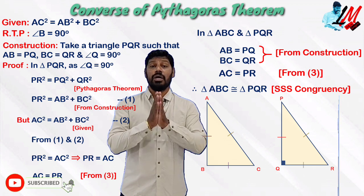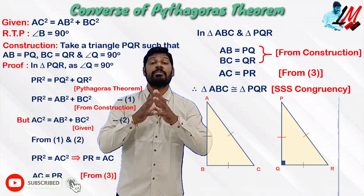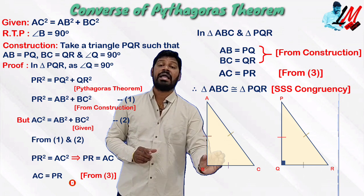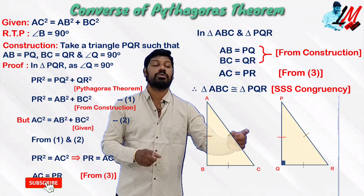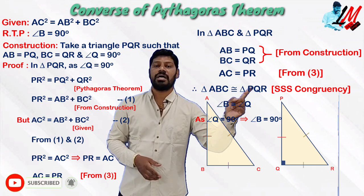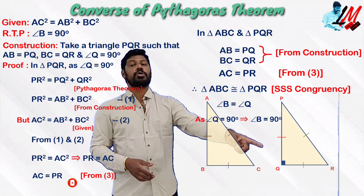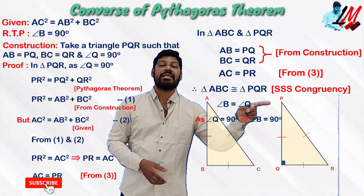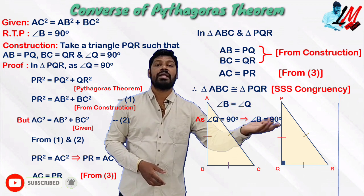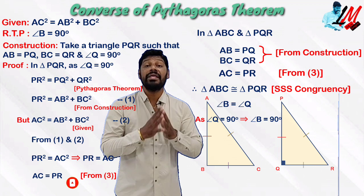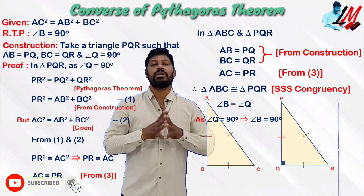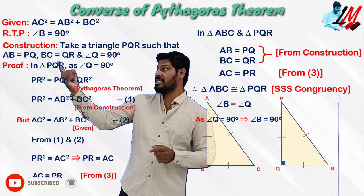Since the two triangles are congruent, their corresponding parts are equal. Therefore angle B equals angle Q. But angle Q was constructed as 90 degrees since PQR is a right triangle. Therefore, the corresponding angle B is also 90 degrees. Hence proved.